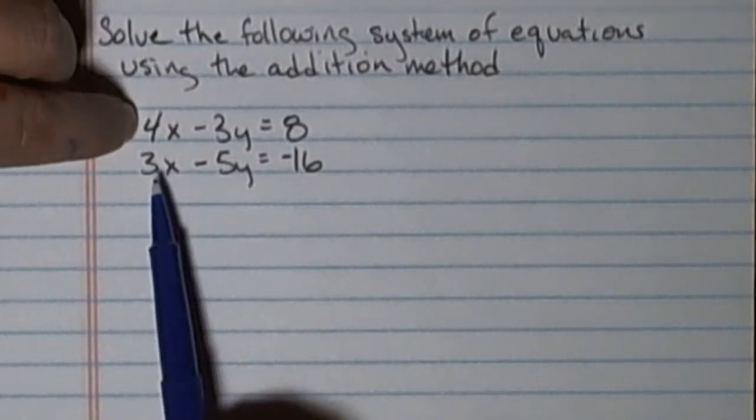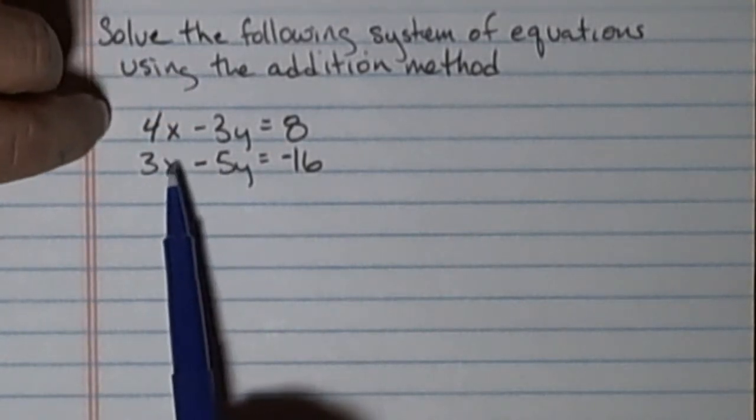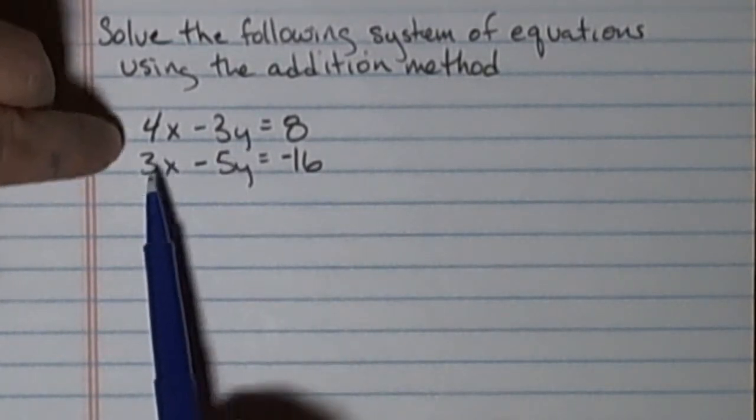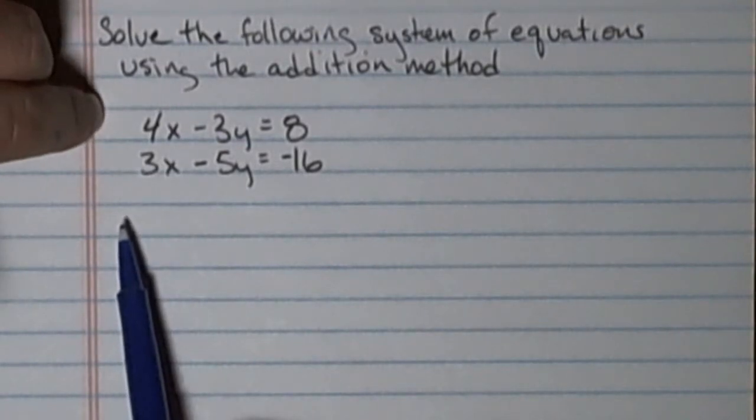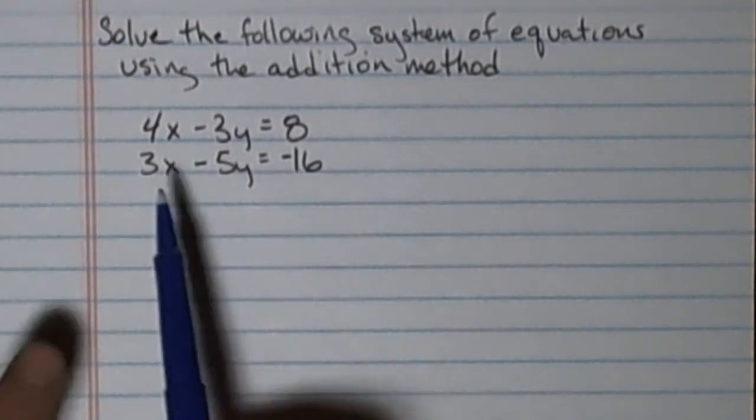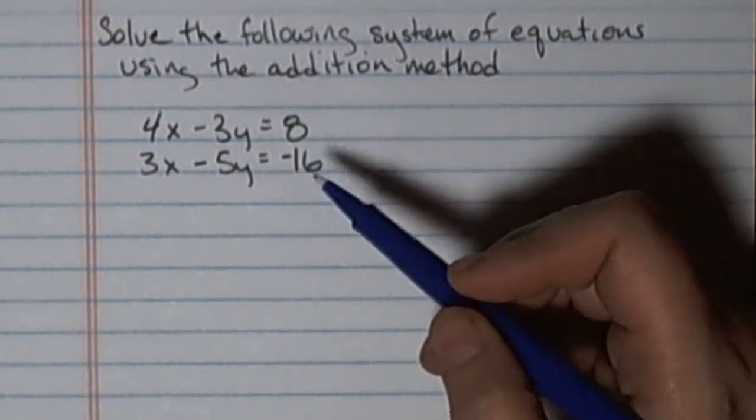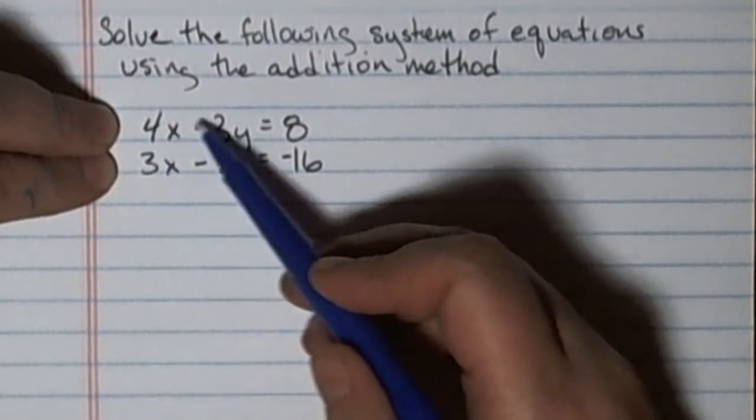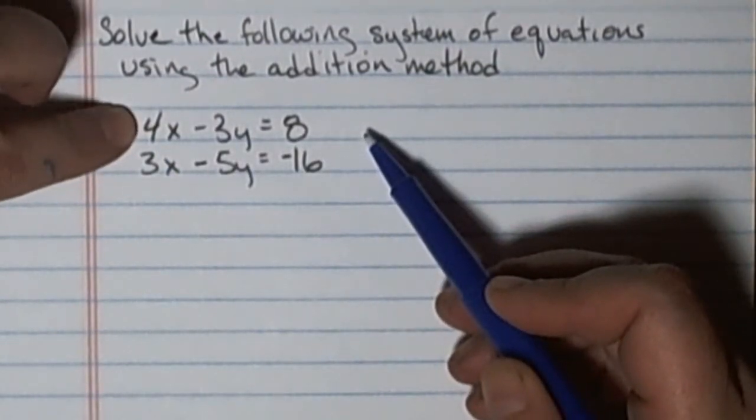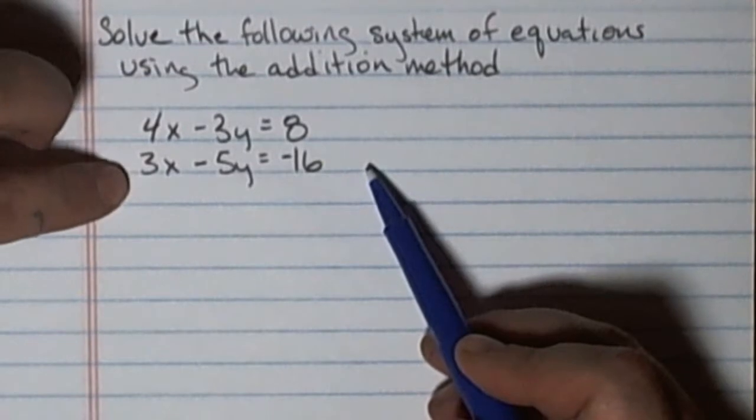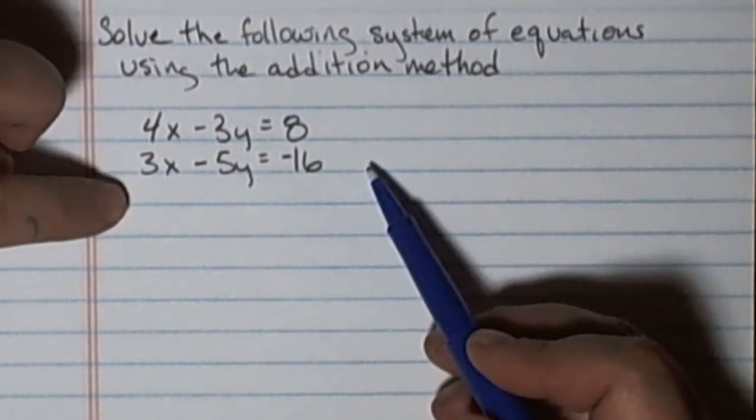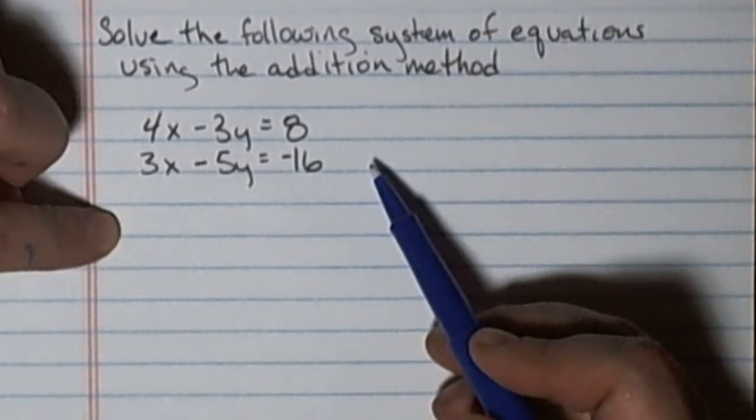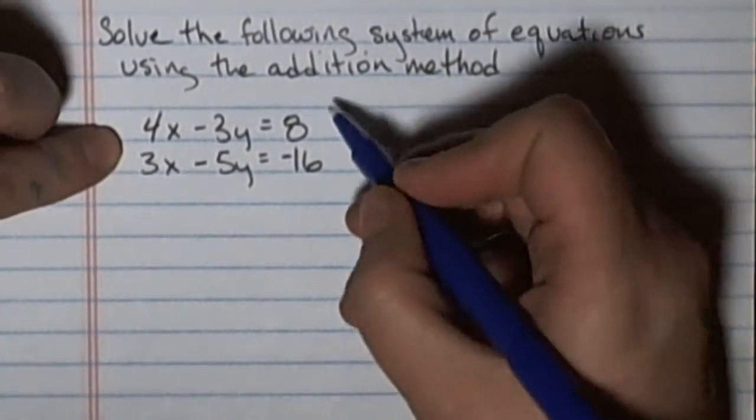Neither of them have opposite signs, so in either case I'm going to have to use a negative constant times one of the equations in order to get my opposite signs to add to zero. I'm going to work with the x's. If 12 was the smallest common multiple, I can multiply the top equation by 3 to get 12x. And I need to multiply the bottom equation by negative 4 to get negative 12x, so the two equations add to zero x.